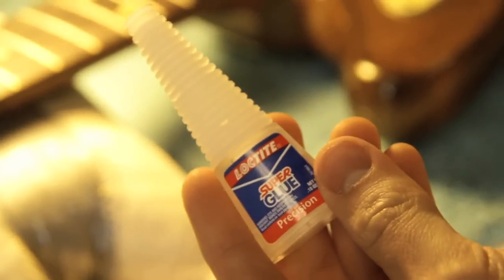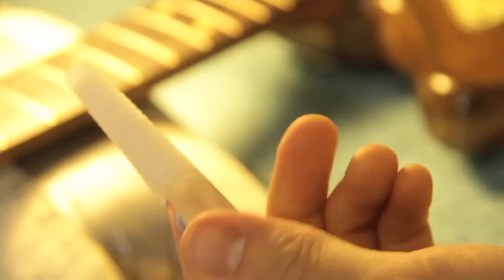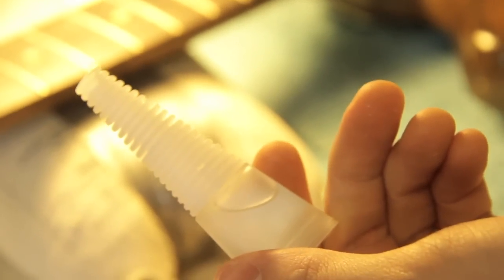The next thing you need is super glue. I prefer super glue in a container like this as opposed to a tube because the tube is just really messy. And you don't want to get super glue all over your nice finish.